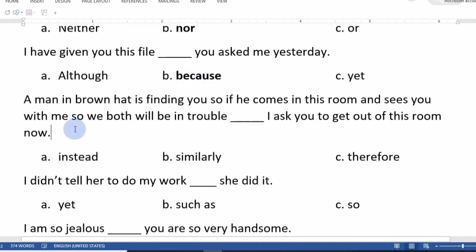A man in brown hat is finding you. If he comes in this room and sees you with me, we both will be in trouble. I ask you to get out of this room now. The options are instead, similarly, or therefore. Therefore is the right answer, so please I ask you to leave the room now.